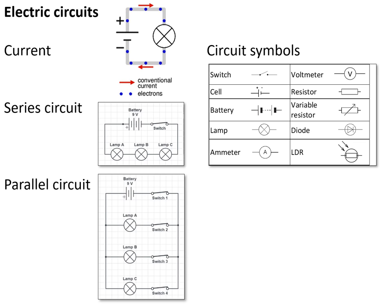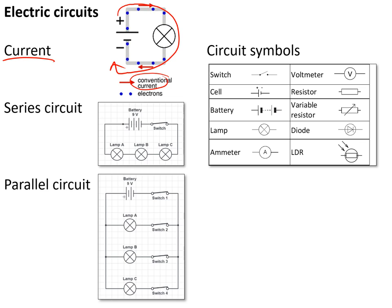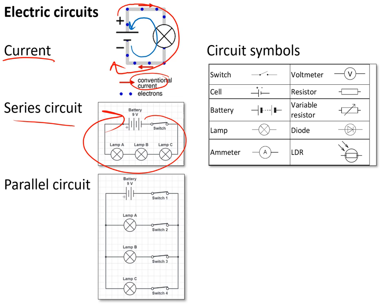In a circuit, current is the flow of charge around that circuit. Current can either be conventional current — positive charge flowing from positive to negative — or electron flow, which is the movement of electrons from negative to positive. A series circuit is one that only has one path for electrons to flow, whereas a parallel circuit has multiple paths for electrons to flow.